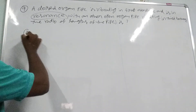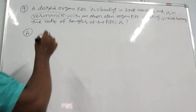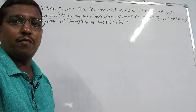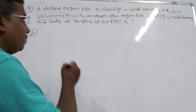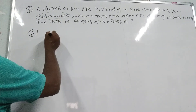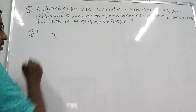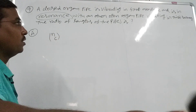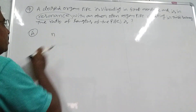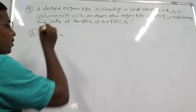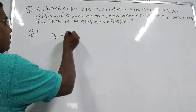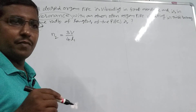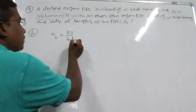In the solution, we consider first that the closed organ pipe is vibrating in first overtone. So for a closed organ pipe, the first overtone frequency is N2, which is equal to 3V by 4L_c, where L_c is the length of the closed pipe.